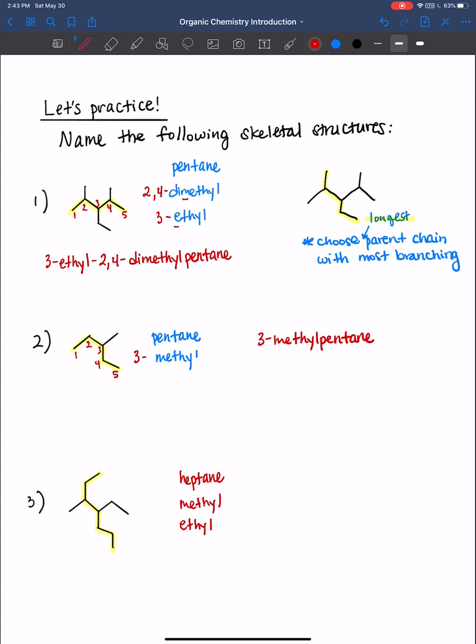Now we need to number our longest carbon chain such that it has the substituents of the lowest number. And so here we can number it 1, 2, 3, 4, 5, 6, 7. Or we can number it from the bottom. 1, 2, 3, 4, 5, 6, 7. So are you going to number it from top to bottom or from bottom to top? Excellent. 1, 2, 3, 4, 5, 6, 7. So the substituents get the lowest number. So we have a 3-methyl and 4-ethyl.